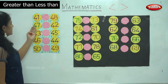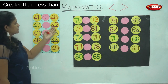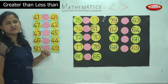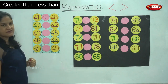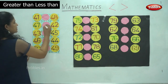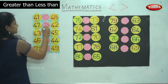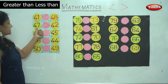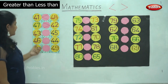The next two numbers are 47 and 42. We have to see which is the bigger number. Number 47 is bigger, so the mouth opens towards the bigger number. It is read as 47 is greater than 42.